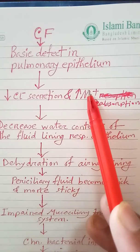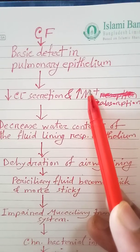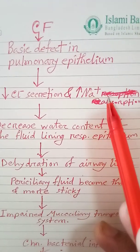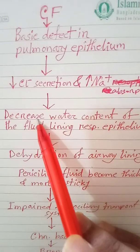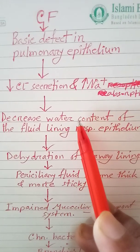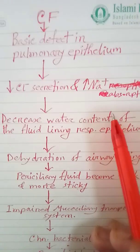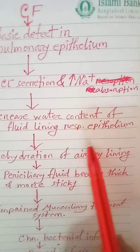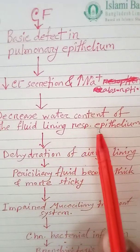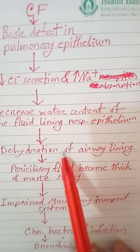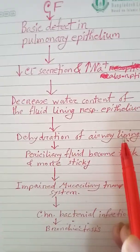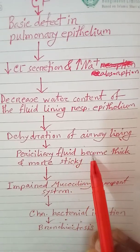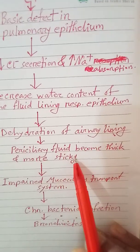With the defective CFTR, chloride is trapped inside the epithelial cell. Sodium follows chloride and is also trapped inside the cell. Water then follows sodium. As a result, the airway lining epithelium becomes dry — there is dehydration of the airway lining, and the periciliary fluid becomes thick and sticky.